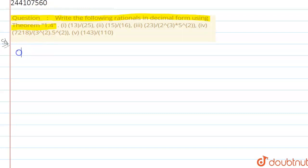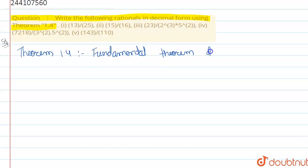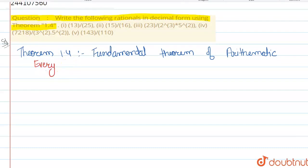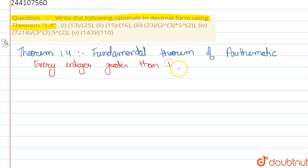So, Theorem 1.4 is the Fundamental Theorem of Arithmetic. What is the theorem? It says that every integer greater than 1 can be written as the product of primes.